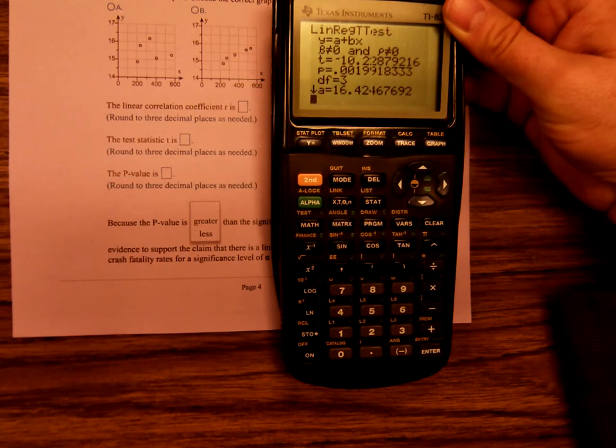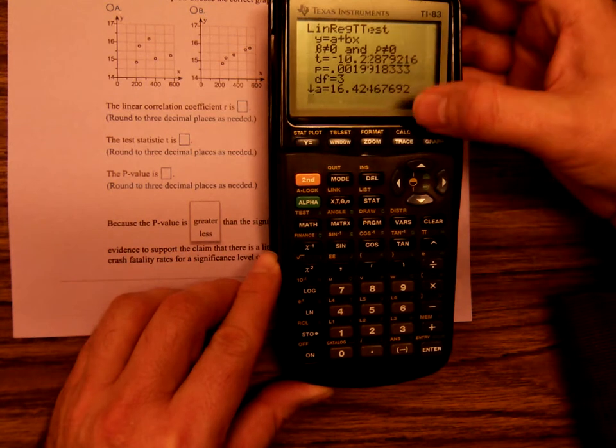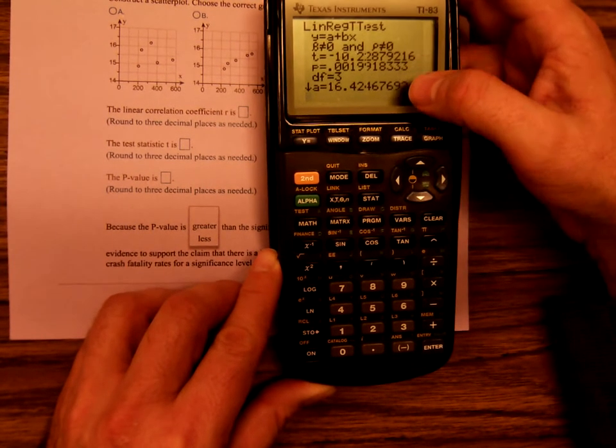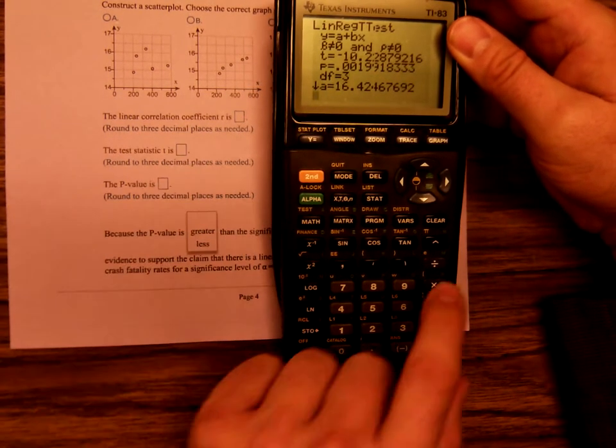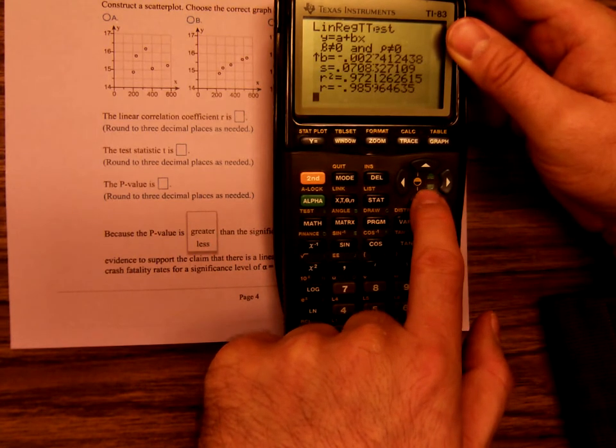Now it should be L1, L2. Make sure that you have the not equal to zero there, the less than or the greater than zero. Scan down and hit calculate. It does a little thinking and it gives you the regression equation there. It's going to give us a lot more than what they're asking for right here. It asks, the first thing is find the linear correlation coefficient r. Well we've got to scan down. There's R squared. Well there's R.